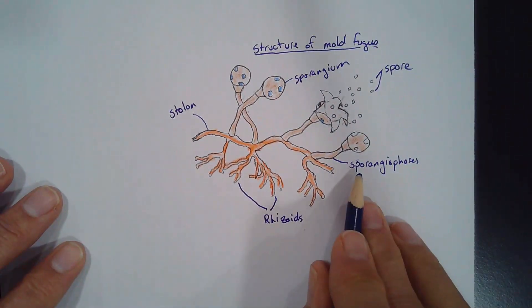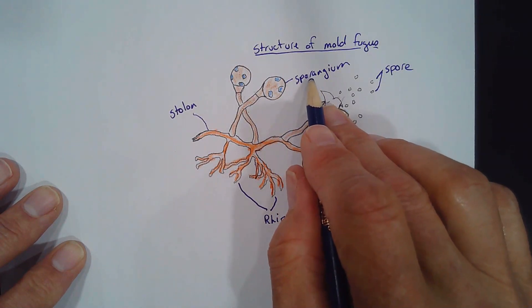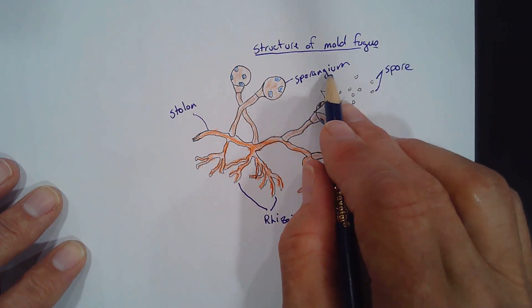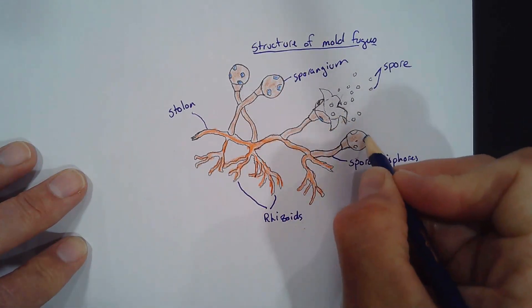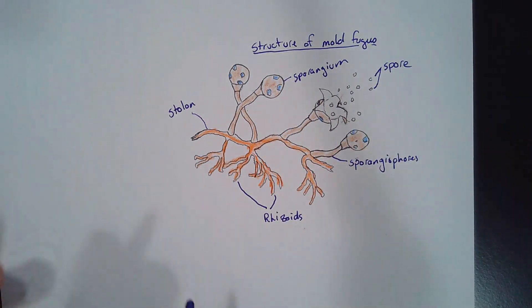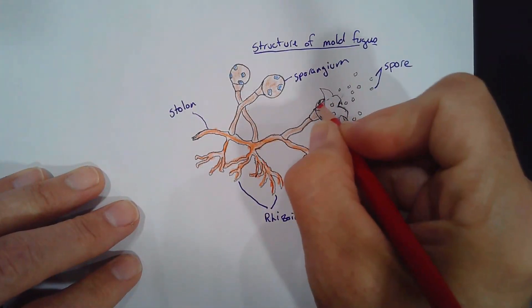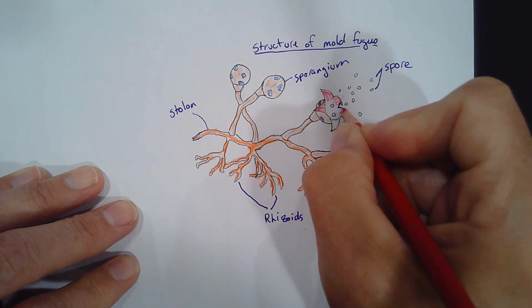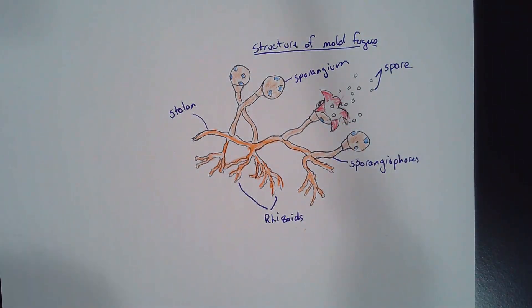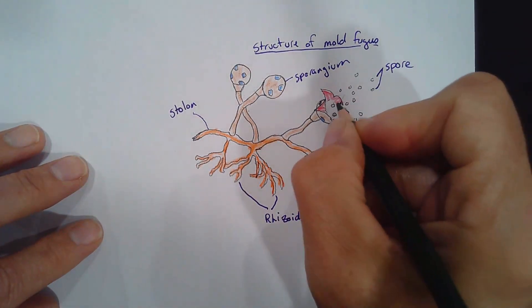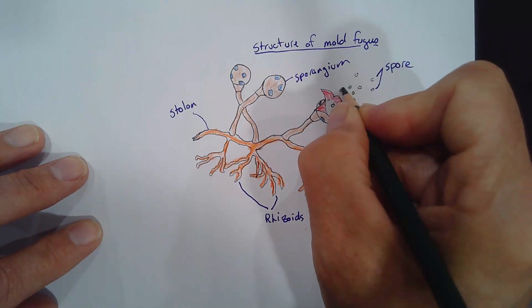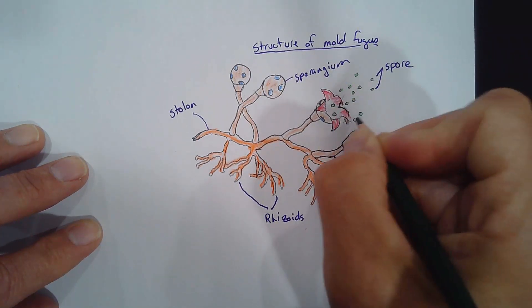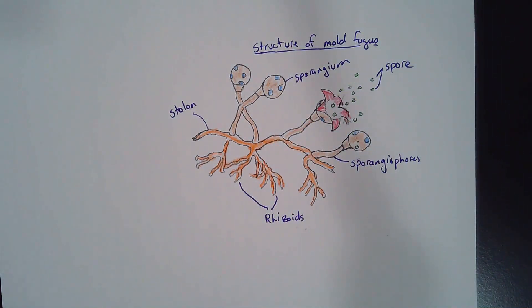Sporangium, S-P-O-R-A-N-G-I-U-M. Sporangium. Aren't those cool names? Bread mold tends to be like a greenish color, right? Like a blackish green. Bread mold.